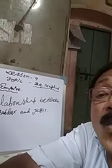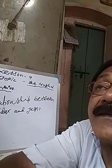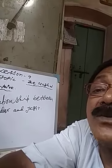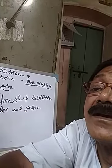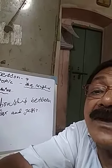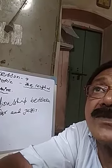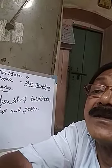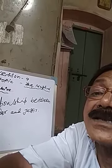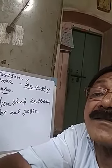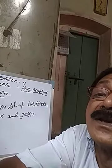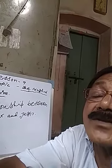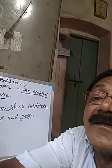Often Mansabdars had to serve outside their Zagir. In that case, the revenue from the Zagir was collected by their servants on their behalf. When Mansabdars remained outside for any piece of work, the servants would collect revenues from the peasants and farmers on behalf of the Mansabdar.